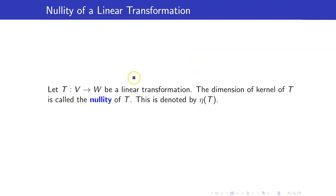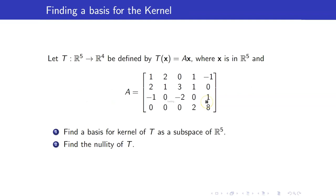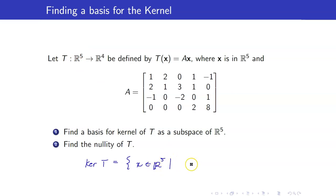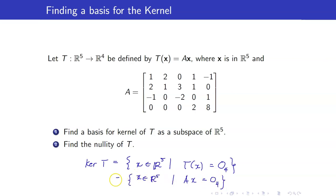Since we have shown that the kernel of T is a subspace of V, we can talk about its dimension. We call the dimension of the kernel of T the nullity of T, denoted η(T). Let us consider a linear transformation that takes a vector in R5 to R4 by multiplying A on the left. Let us find a basis for the kernel and the nullity of T. The kernel of T consists of all X in R5 that get mapped to the zero vector in R4, and since T(X) = AX, we are looking for the null space of A.